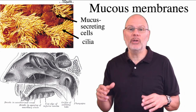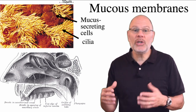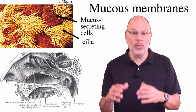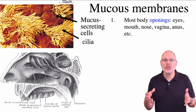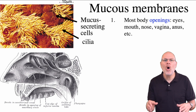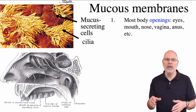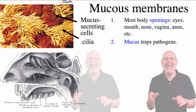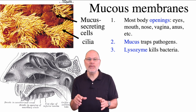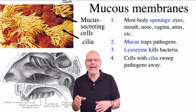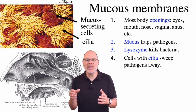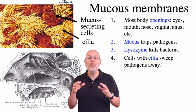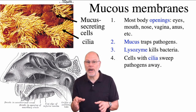Organisms like you and me are open systems — we need to exchange matter and information with the environment. So we have openings in our skin: our mouths, nostrils, eyes, ears, anus, vagina, and urethra — all of these are called mucous membranes because mucus gets secreted onto them. The sticky mucus traps pathogens. An enzyme called lysozyme that's secreted into the mucus kills bacteria. Finally, cilia — minute hair-like structures on cell surfaces — rhythmically move, creating a current that sweeps mucus along, moving it out of the body or down the throat and into our esophagus.